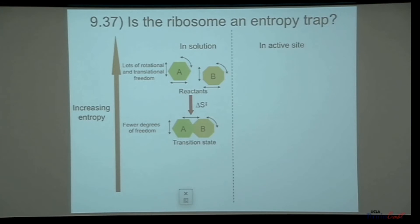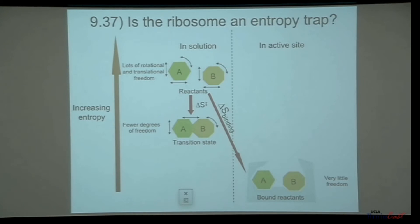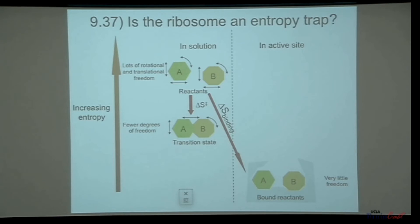But let's imagine what happens when those two tRNA species are bound in the peptidyl transferase active site. Now they're bound very tightly in the active site. They're huge macromolecules, bound very tightly in position by all sorts of different macromolecular interactions. So they're held very tightly in position, with very little freedom to move about — they can't move independently of one another. So they're trapped in a very low entropy state.